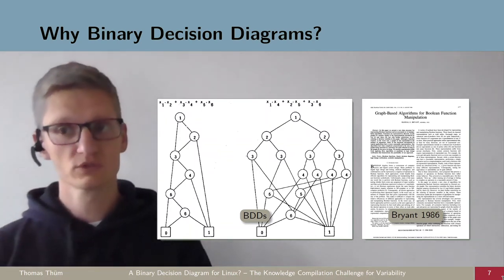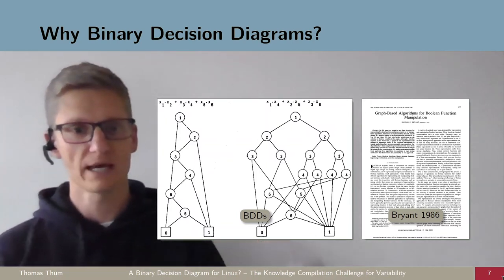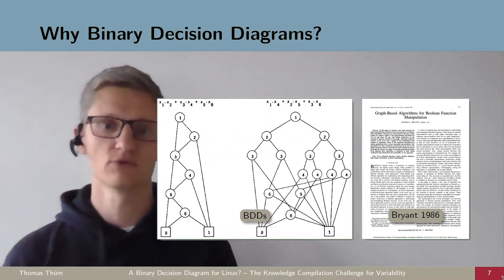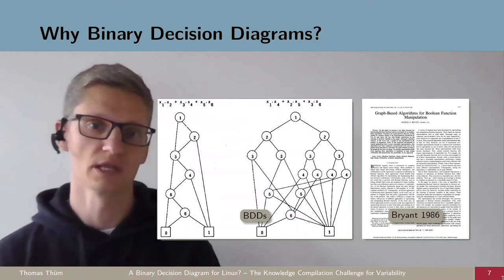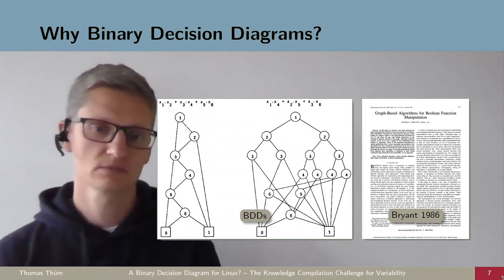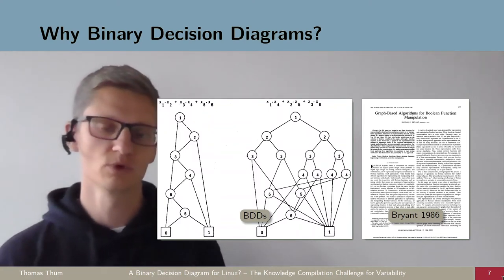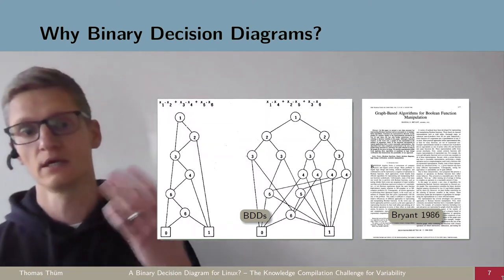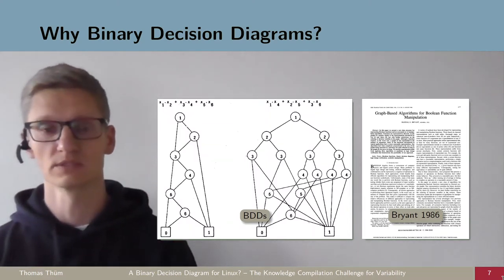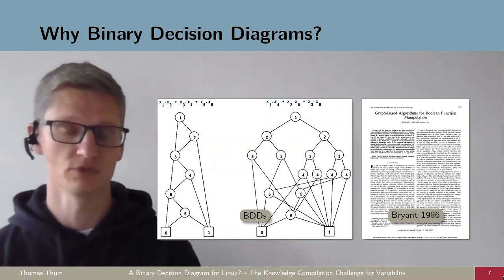You do this until you reach one of the bottom elements, which is either zero or one, one indicating that you found a satisfiable assignment for this variable, for this formula.